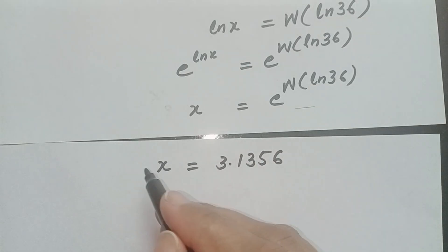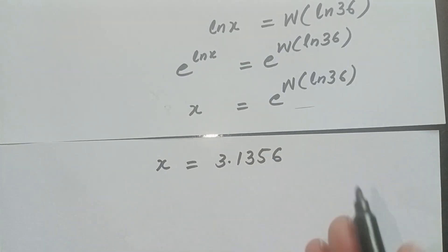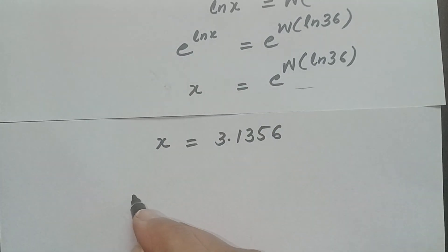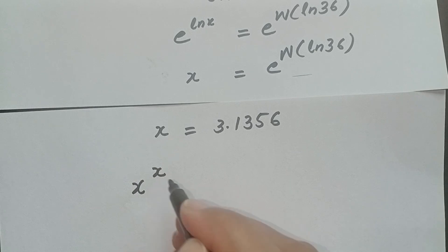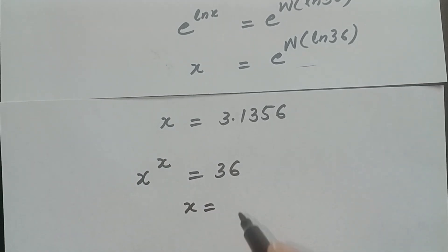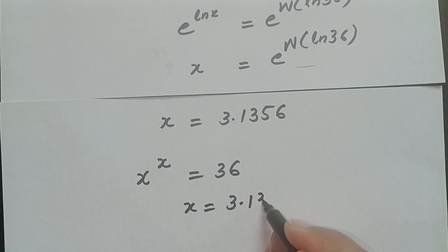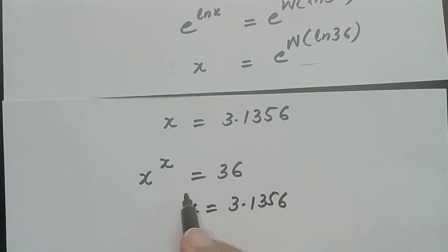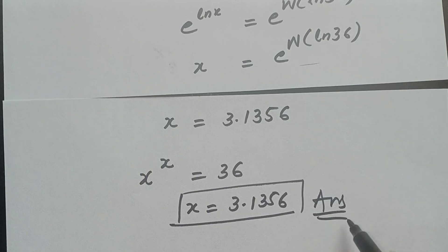So the final value of x: the equation x power x equals 36, where x equals 3.1356. This is the final value which is the answer of this question.